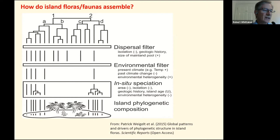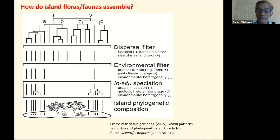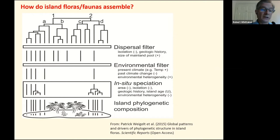Second, we have the environment filter. Arriving at the wrong destination means failure to establish — the climate, habitat, substrate, etc. must be right. Third, we have in-situ speciation. Once arrived on remote islands, some species find empty niche space around them and speciate to occupy these vacant niches. So the pool of species available dictates the options; the dispersal and environmental filters determine who gets there and establishes; and evolution then takes over in shaping the eventual composition and diversity. And all the while, new species can arrive and some established ones fail, leading to turnover of membership continuing throughout.